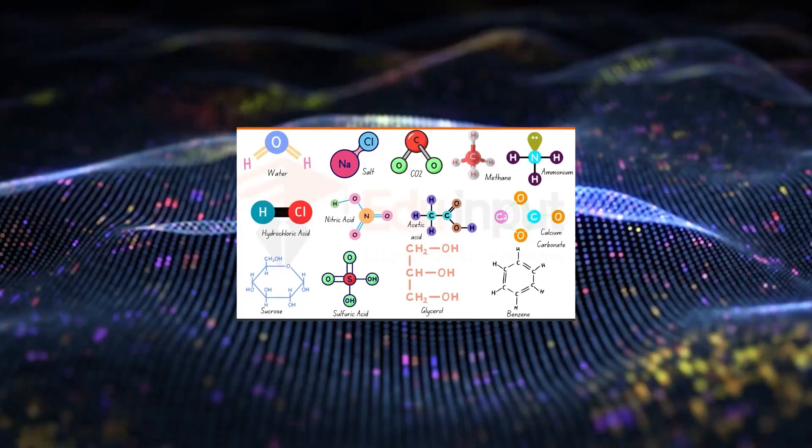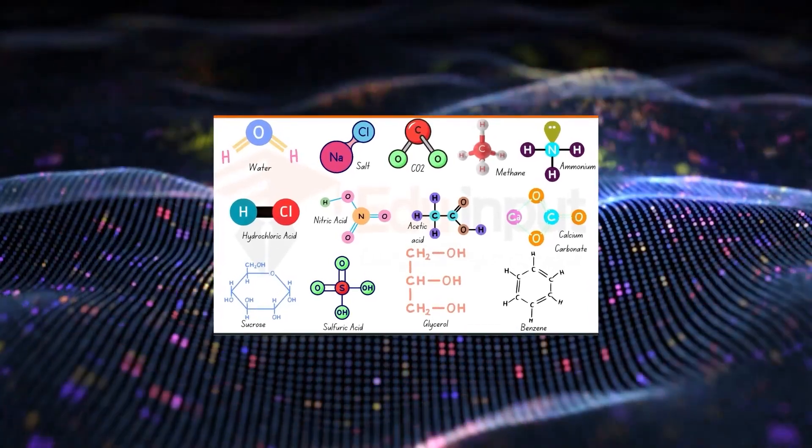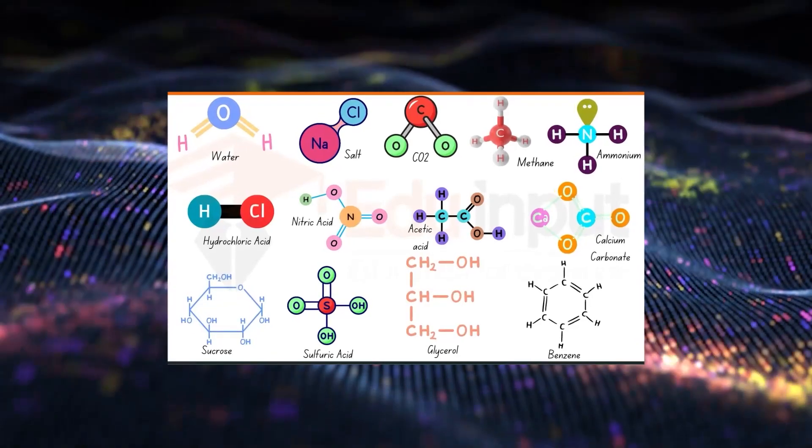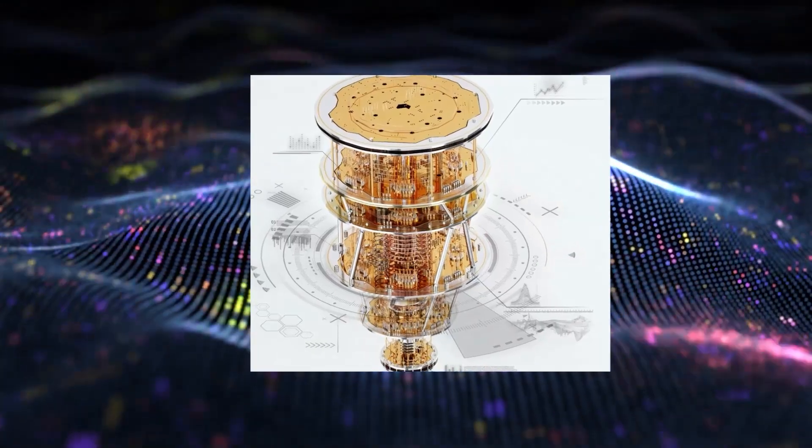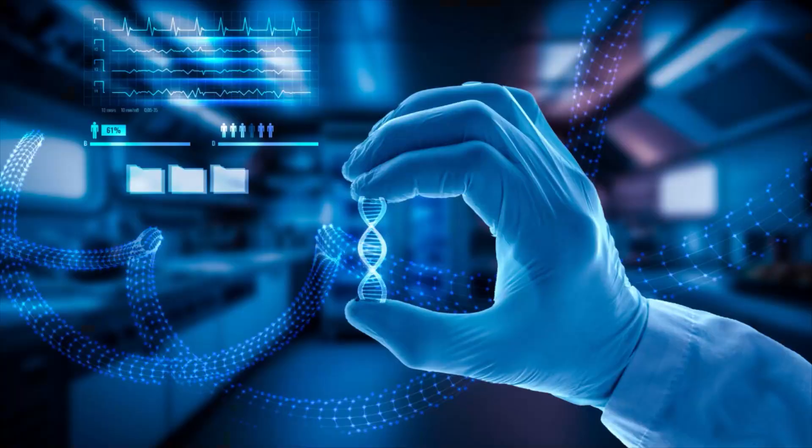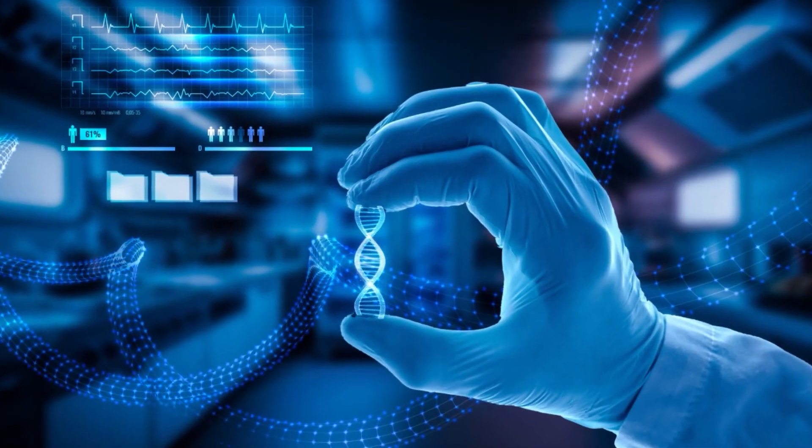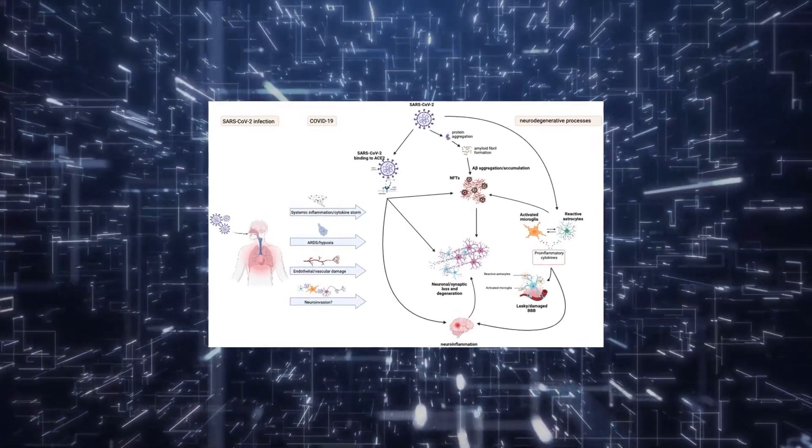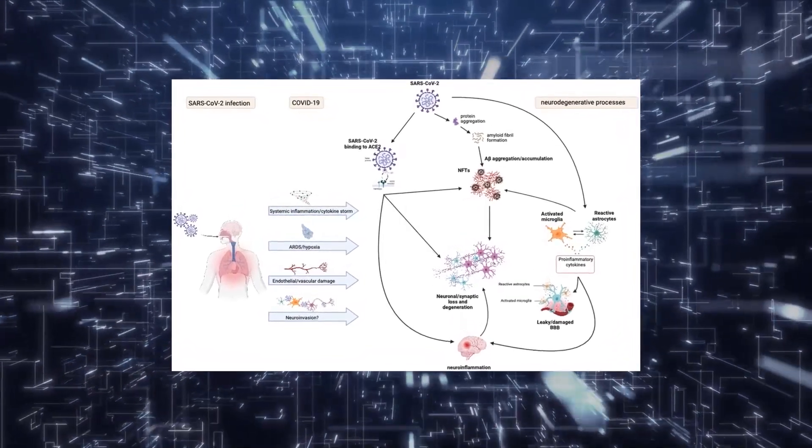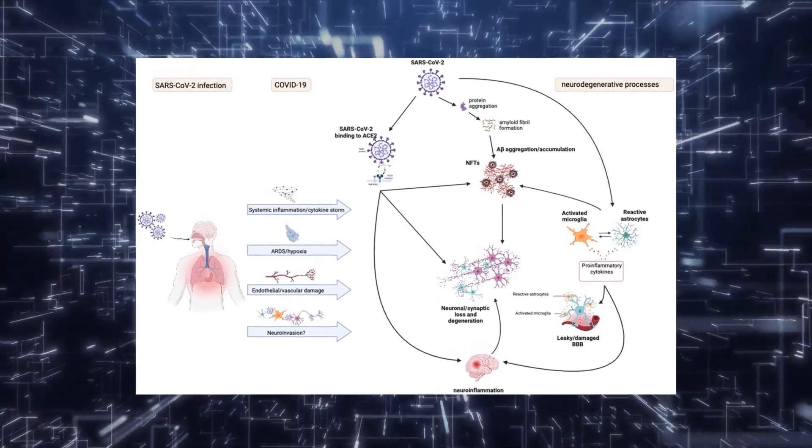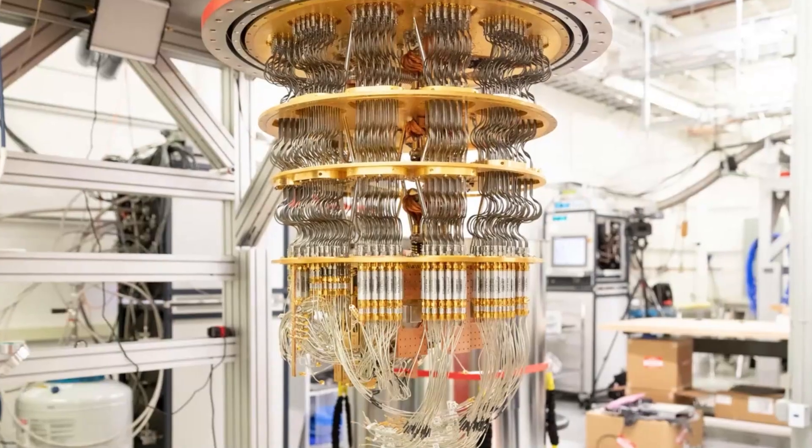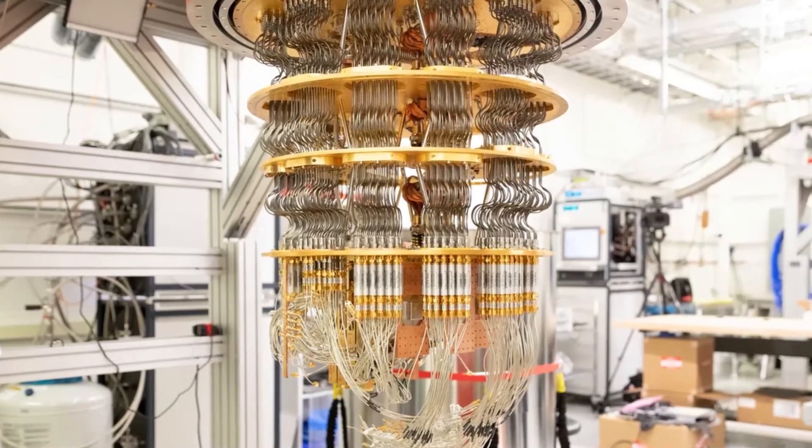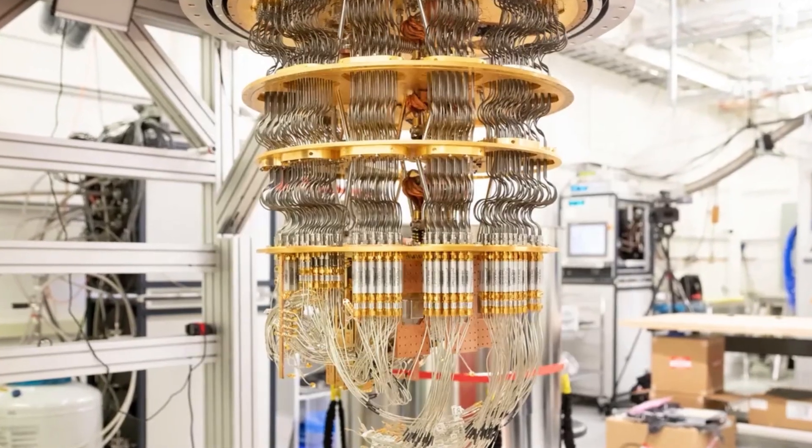Drug discovery and personalized medicine. Now for something a little more hopeful. Right now, designing new medicines is basically trial and error. We test thousands of chemical compounds, tweak them, and hope one works. But quantum computers could simulate molecular interactions at an atomic level, meaning we could design new drugs perfectly tailored to fight diseases before even testing them in a lab. This could fast-track treatments for things like cancer, Alzheimer's, and even rare genetic diseases, potentially saving millions of lives. And because quantum computers are so good at simulating chemistry, they might even help us discover cures for diseases we currently don't understand.